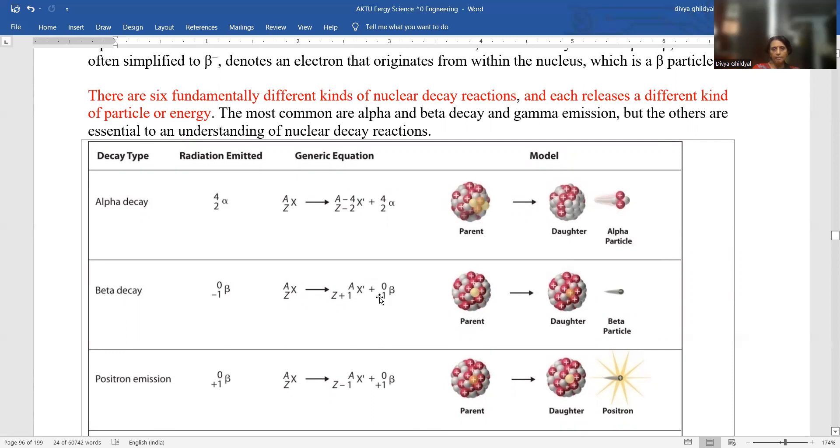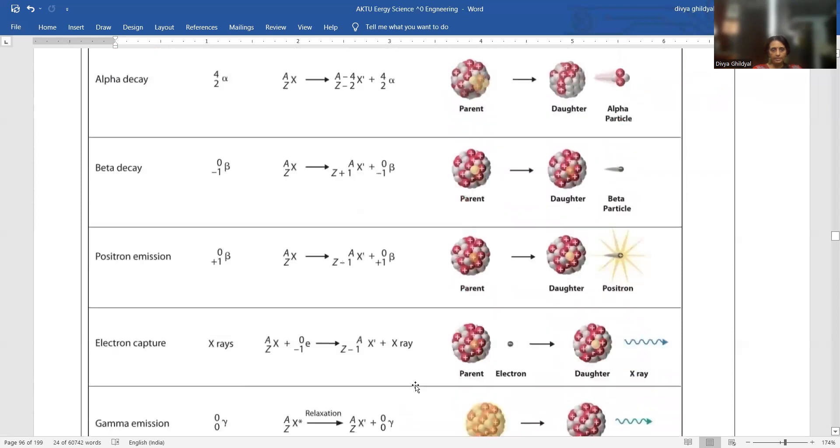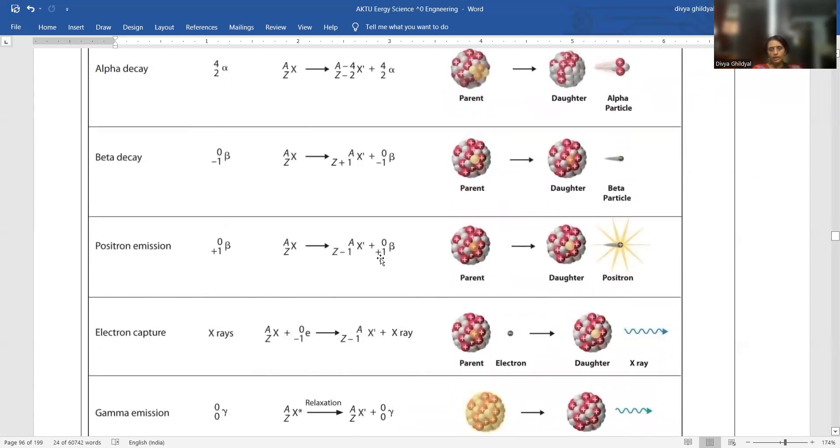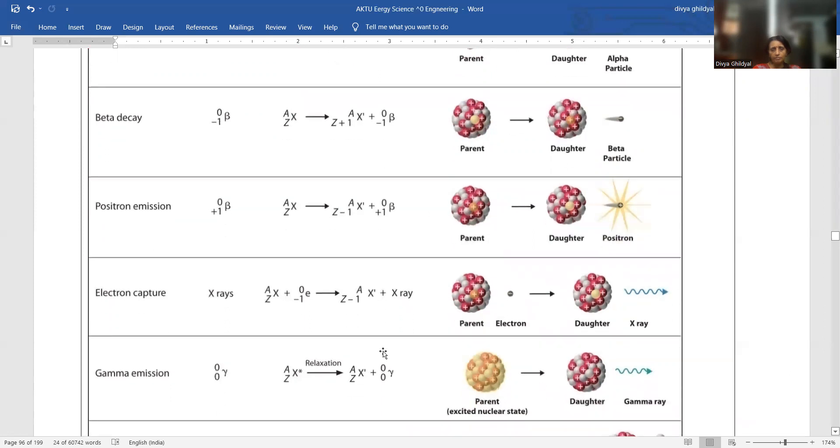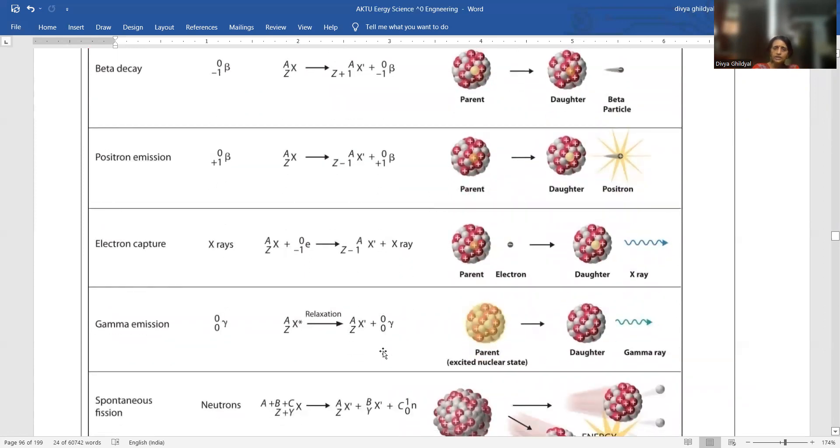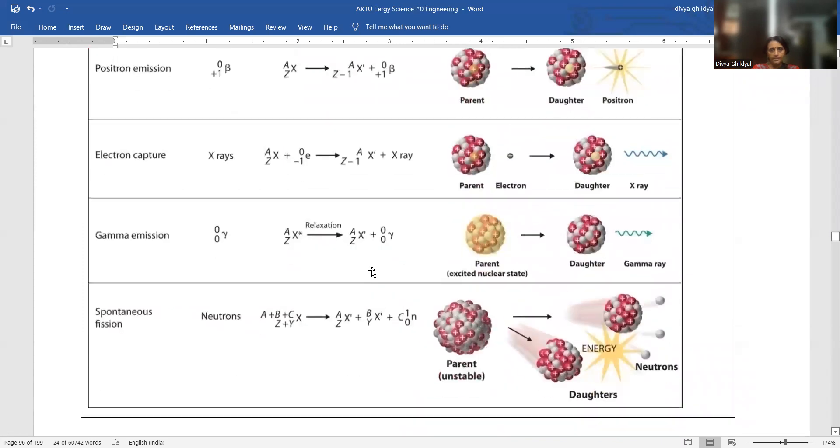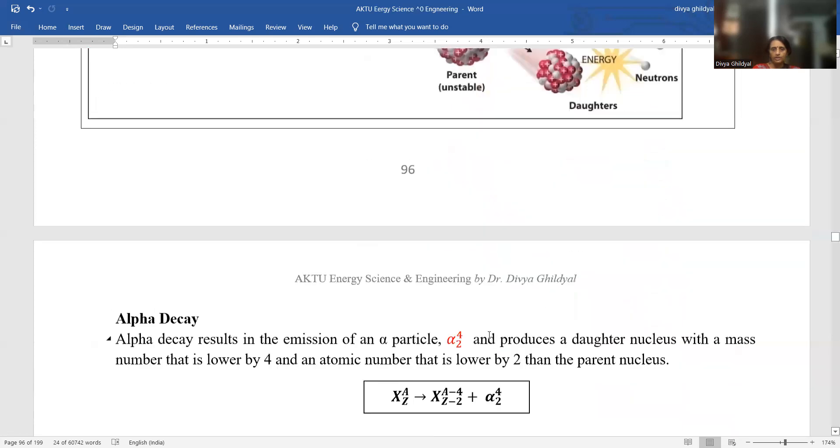For beta decay, mass number there will be no change, but atomic number will decrease by 1, then beta particle will be emitted. For positron emission, the atomic number will be increasing by 1 and mass number will remain the same. Electron capture, there will be no change in mass number and the atomic number will decrease by 1. Gamma decay, there will be no change in mass number and atomic number. Gamma rays will be emitted. Spontaneous fission, it will depend upon what type of decay you are taking into consideration.